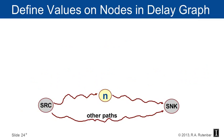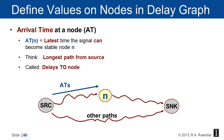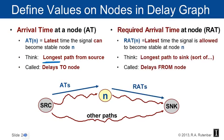We need to define some special values on the nodes in the delay graph. I've got a picture with the source node at the left, the sink node at the right, and a highlighted node N with paths before and after it. We define the arrival time AT(N) — the latest time the signal can become stable at node N, essentially the longest path from the source. This is sometimes called the delay to the node.